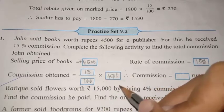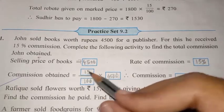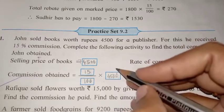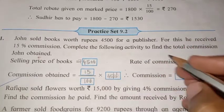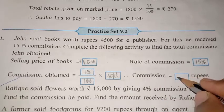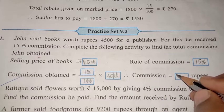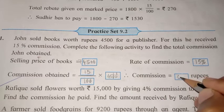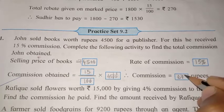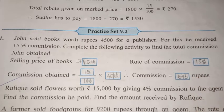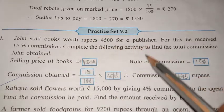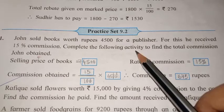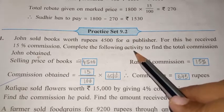The two zeros cancel with the two zeros, so we calculate 45 × 15. These two zeros cancel with those two zeros. Therefore commission is equal to rupees 675.